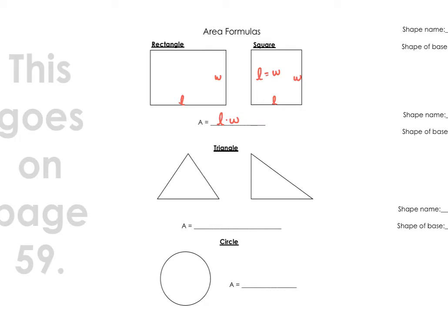In a triangle, the two dimensions we look at are what we call base — which is one side of the triangle — and height. Height is the distance from the point straight down perpendicular to the base. The way we find the area of a triangle is one half base times height, or 0.5 times base times height, since a triangle is just half of a rectangle.